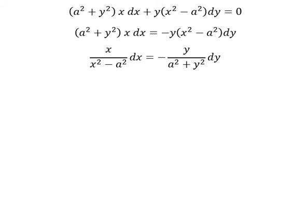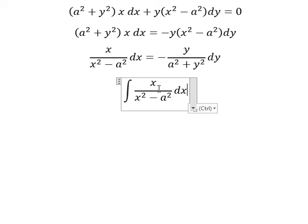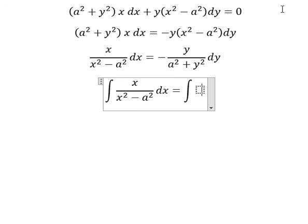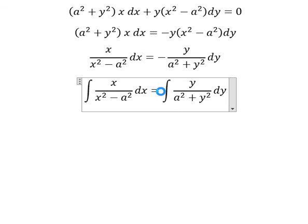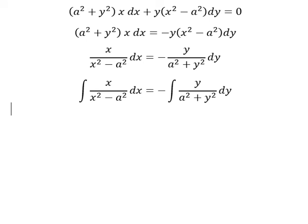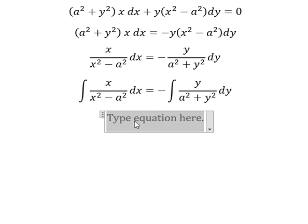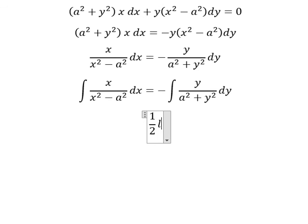Next, we integrate both sides. And now we get the final answer. The integral of this one gives one half ln of the absolute value of x squared minus a squared.